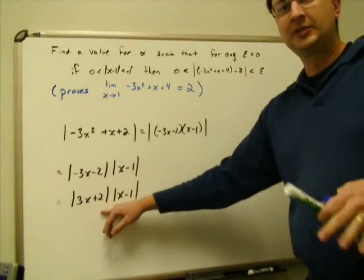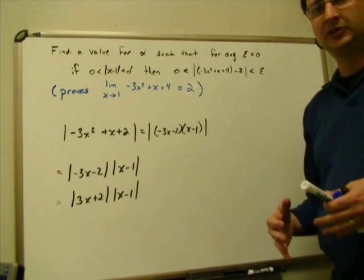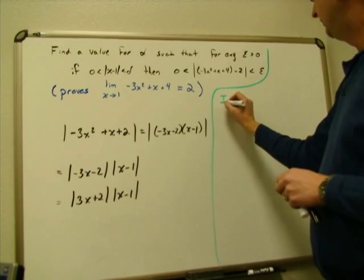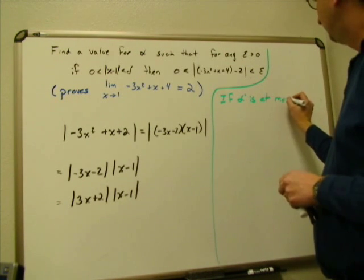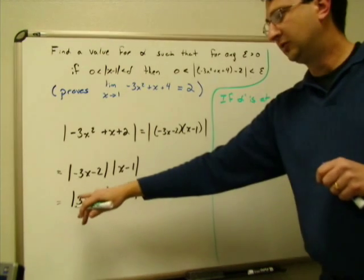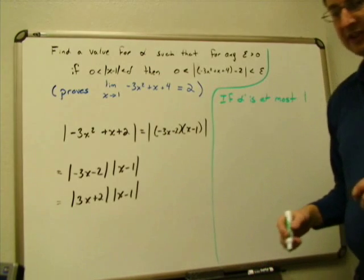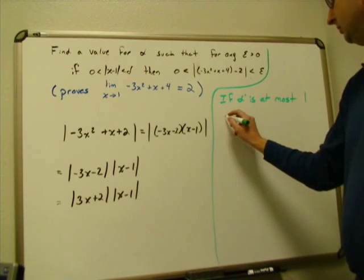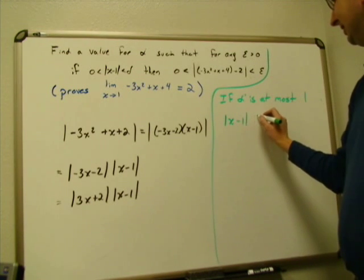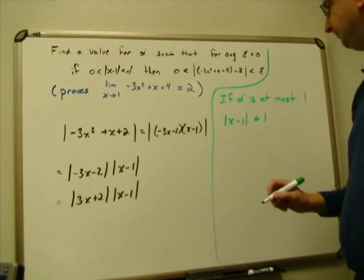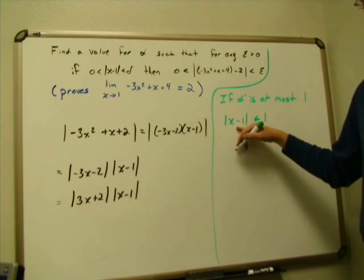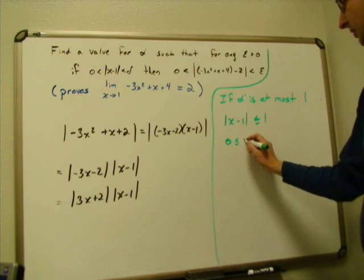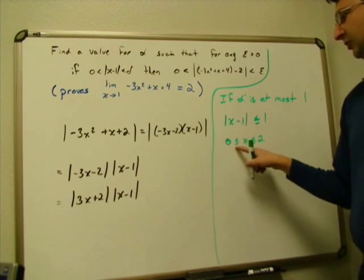Now I need to bound what the maximum value of absolute value of three x plus two can be. I'll pick an upper limit for delta to help with this. If delta is at most one, then the absolute value of x minus one is less than or equal to one, which means x must be between zero and two. So if delta is at most one, x is constrained to the interval zero to two.